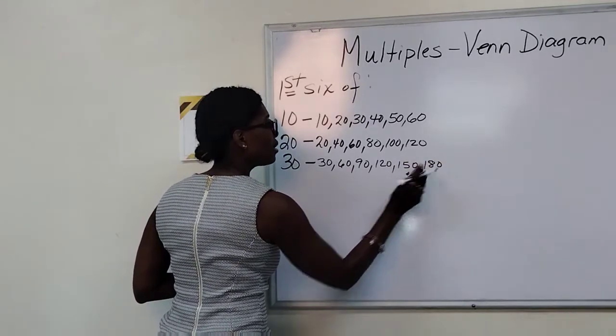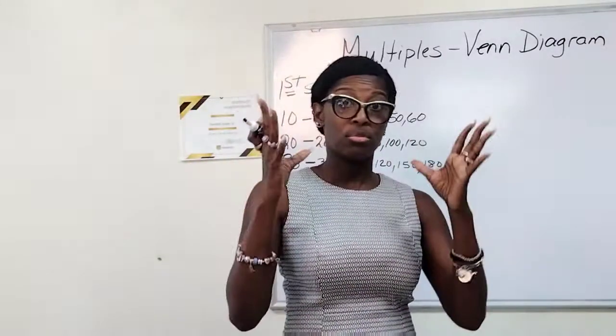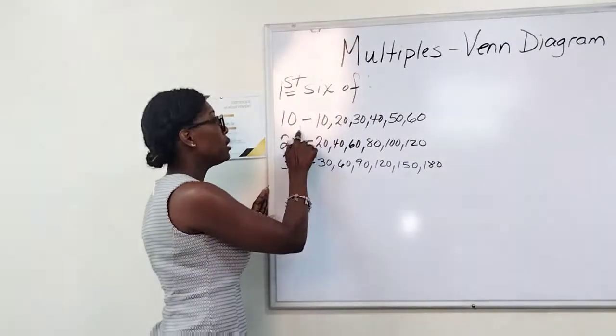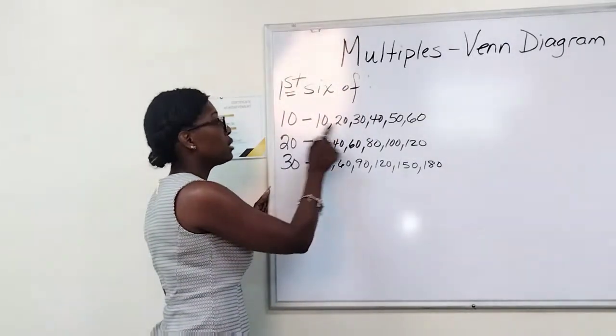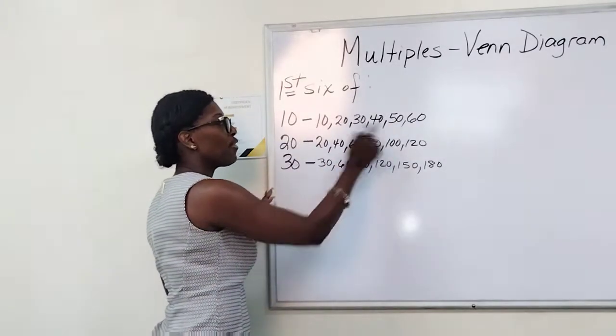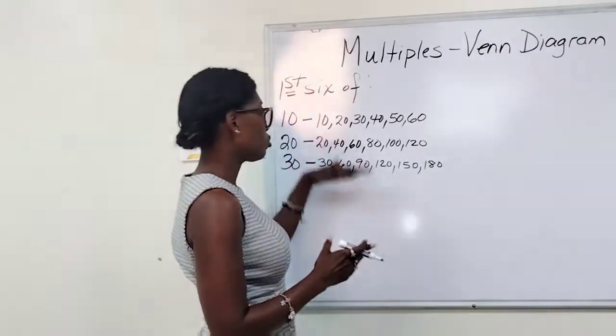And 180. And just to give you something to think about: it was 10 times one, 10 times two, 10 times three, 10 times four, 10 times five, and 10 times six, and so forth.